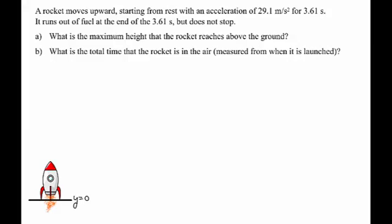In this problem, we have a rocket that's going to be launched from the ground. It burns fuel for 3.61 seconds and has an upward acceleration of 29.1 meters per second squared. Then it runs out of fuel after 3.61 seconds. Since it's moving upwards, it's going to continue upwards, go up to reach the highest point, and come back down. This is a problem that we're going to break into two different pieces: the piece where it's accelerating upwards while burning fuel, and then the second piece where it's an object in freefall with only the force of gravity acting on it.